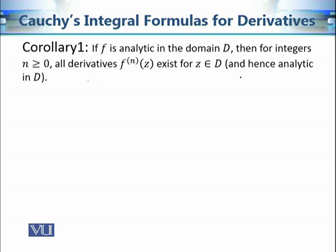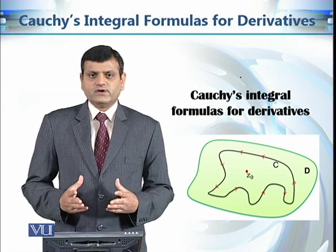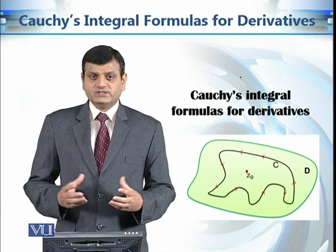This result is useful when evaluating Taylor series or other computations related to analytic functions. The second important consequence concerns harmonic functions: if u is harmonic at every point (x, y) in domain D, then all partial derivatives ux, uy, uxx, uxy, uyy exist and are also harmonic functions. These are important consequences of Cauchy's integral formula for derivatives with far-reaching implications in the theory of complex-valued functions.